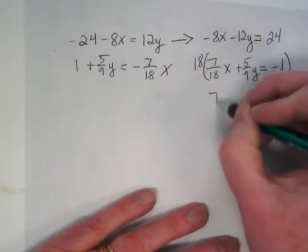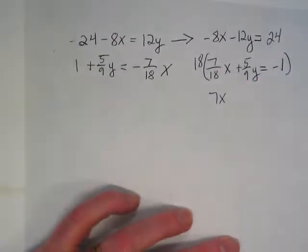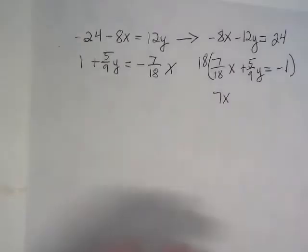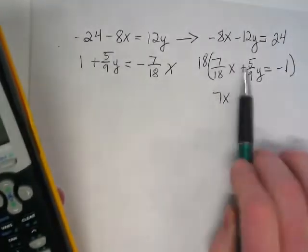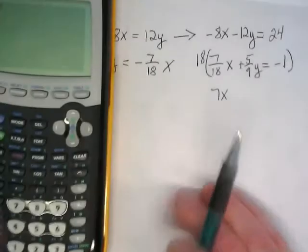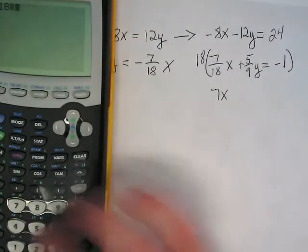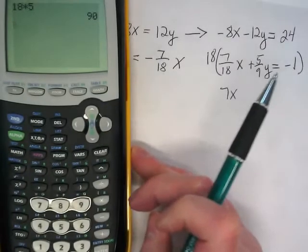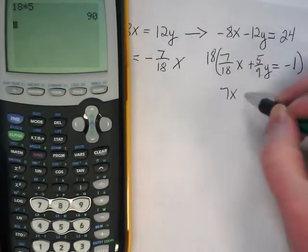If I do 18 times 5, I think I got 90, I did this this morning. 18 times 5, 90, divided by 9, gives me 10y.